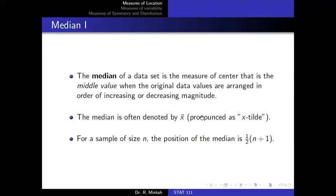Another measure of central tendency is the median. The median of a data set is the number that divides the data into two equal parts — it is the middlemost number in an ordered array, whether ordered in increasing or decreasing order. It is denoted by x̃. For a sample of size n, the position of the median is (n + 1)/2. Note this is the position, not the median value itself.